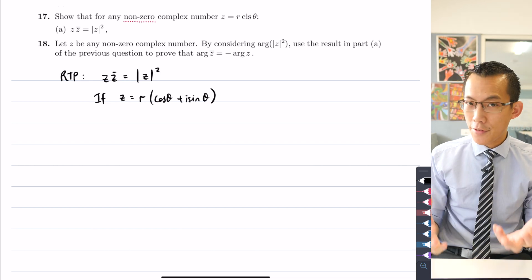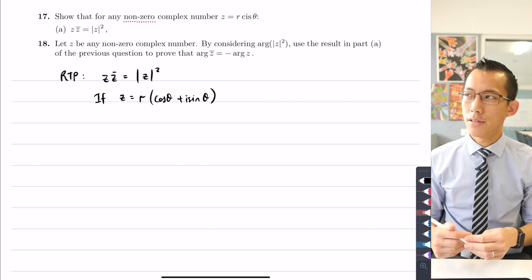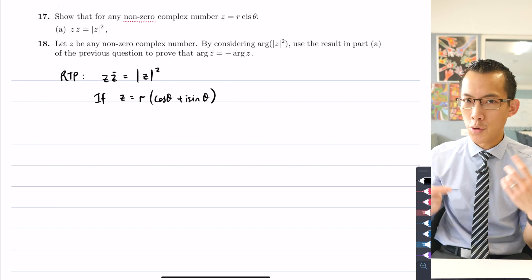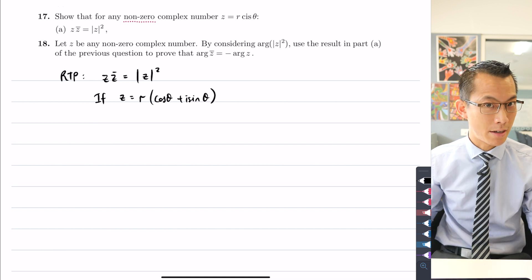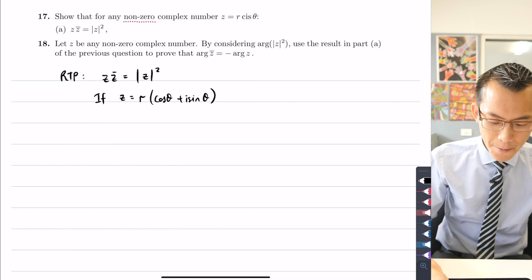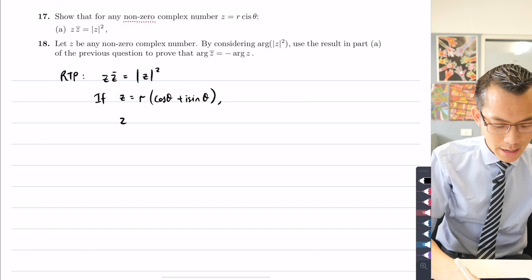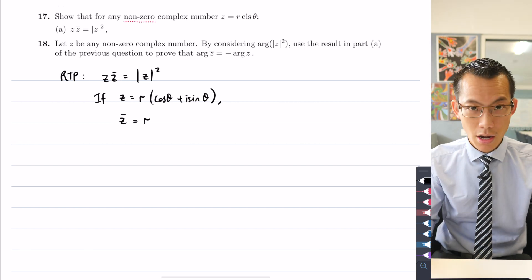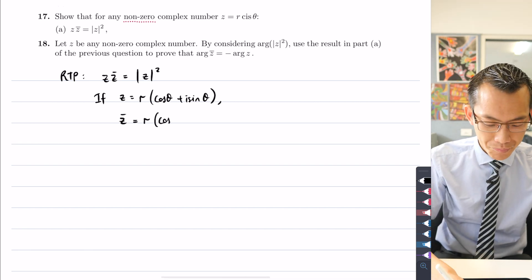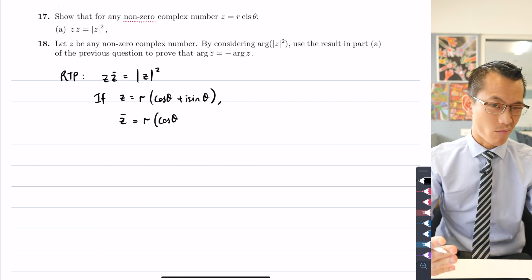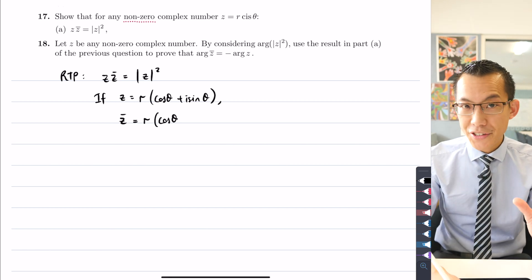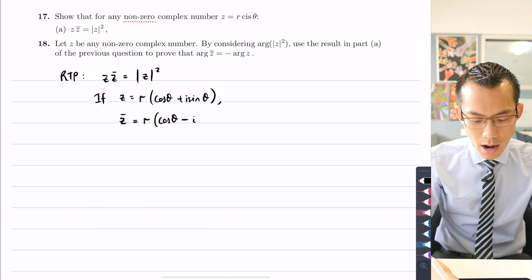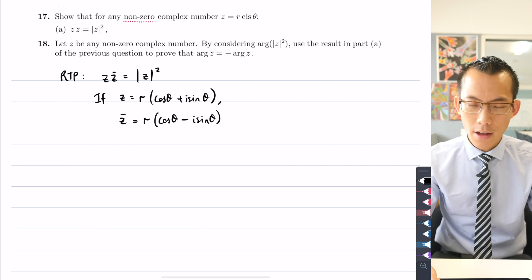Then by definition, the conjugate of z is to take the imaginary part and flip it upside down. If you were positive, make it negative. If you were negative, make it positive. So in this form, the modulus is unchanged, r stays the same, cos theta also stays the same because that's the real part, but here comes the imaginary part, it's minus i sine theta because I'm taking the opposite sign.